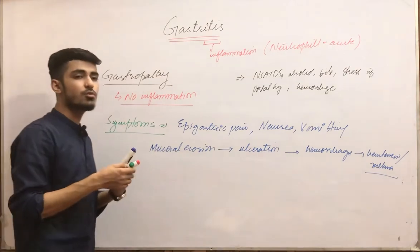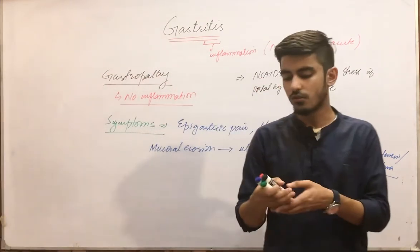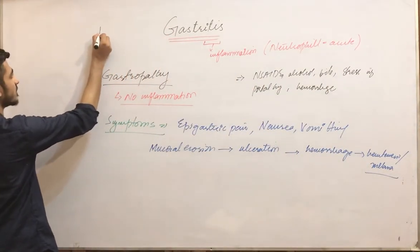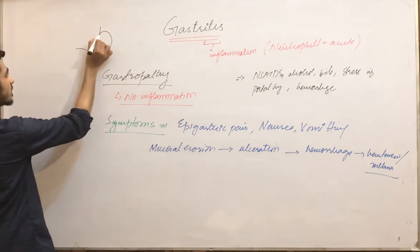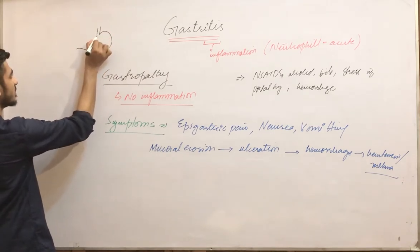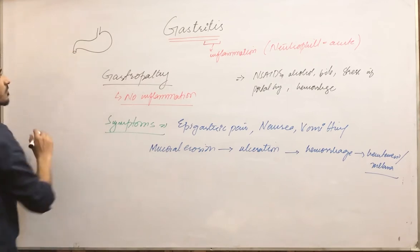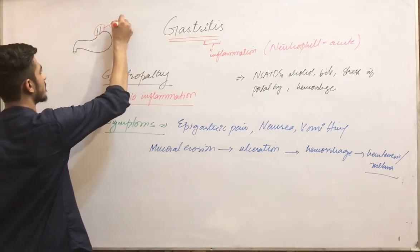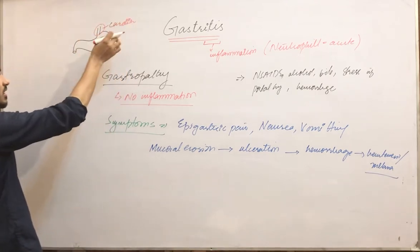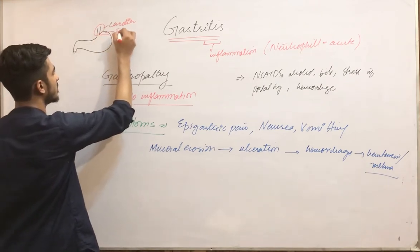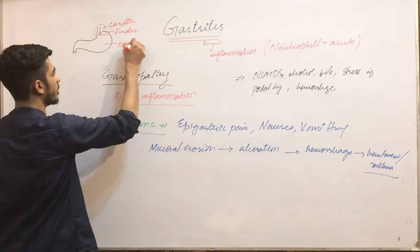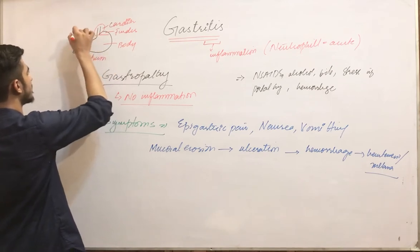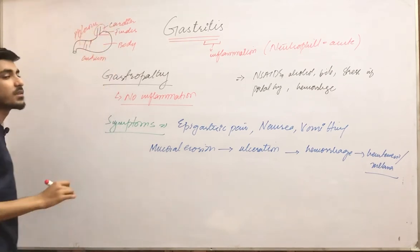Now moving on to the pathogenesis of this disease. Here is a diagram of the stomach showing the cardia, fundus, body, antrum, and pylorus. Inside the stomach there is an acidic environment, and this acid can cause damage to the mucosa.